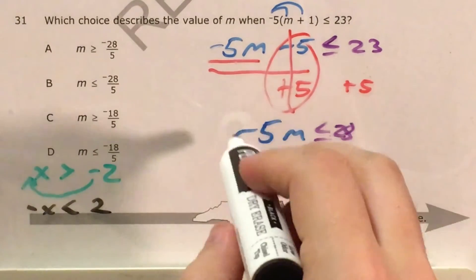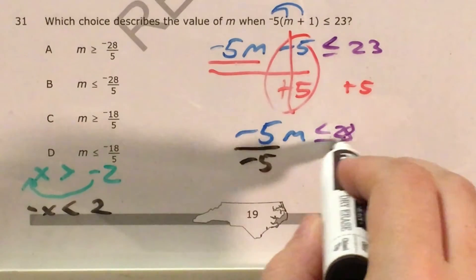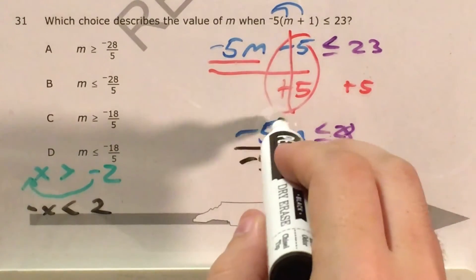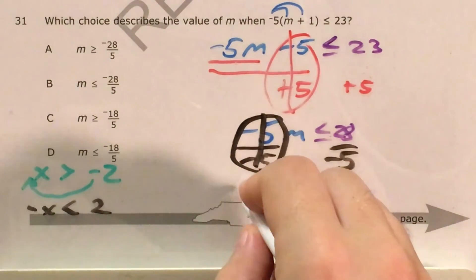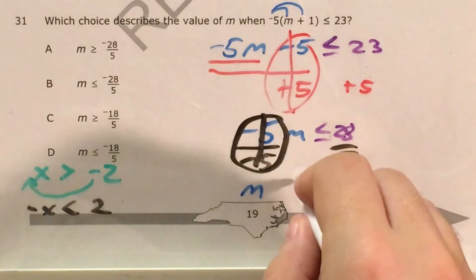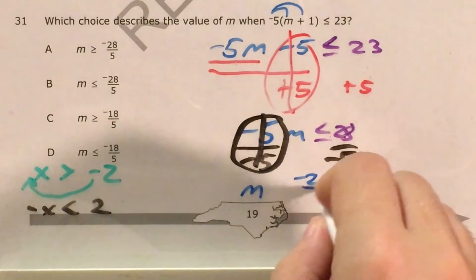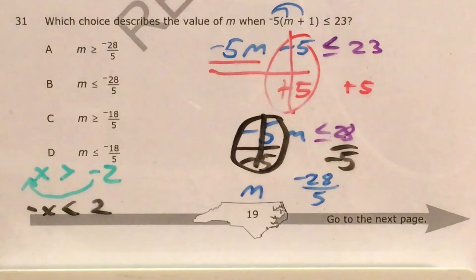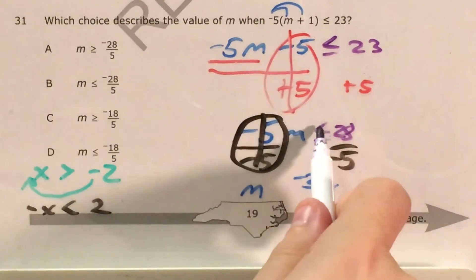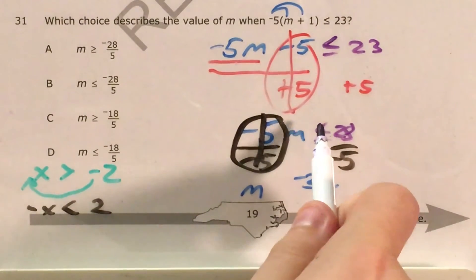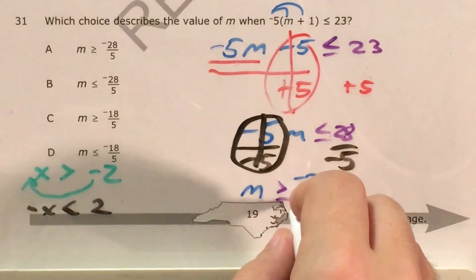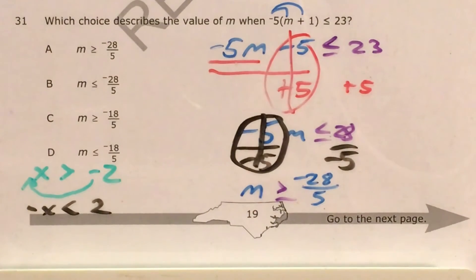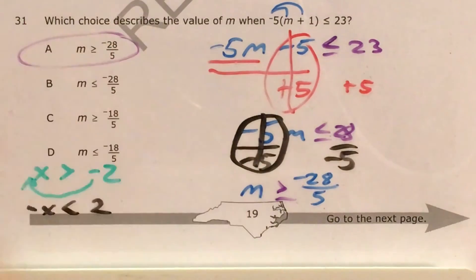If we divide both sides by negative 5, negative 5 divided by negative 5 cancels and we're left with m on the left, negative 28 fifths on the right. But in the middle, this was a less than or equal to sign — it was pointing left — now we have to change its direction and make it point right, so that m is greater than or equal to negative 28 fifths. And the answer that matches that is choice A.